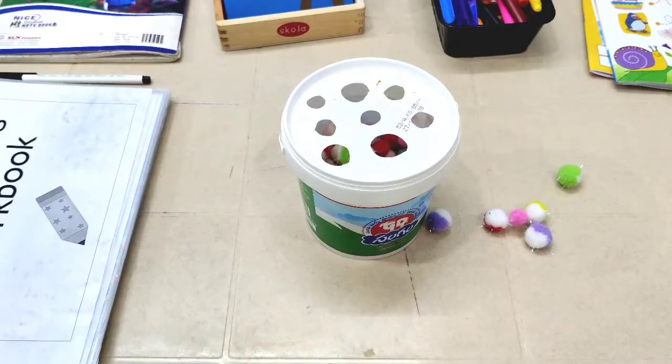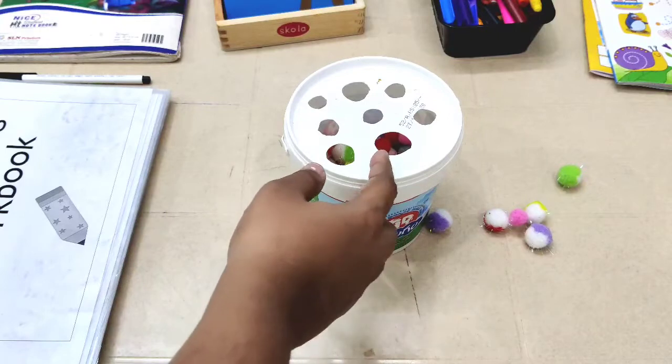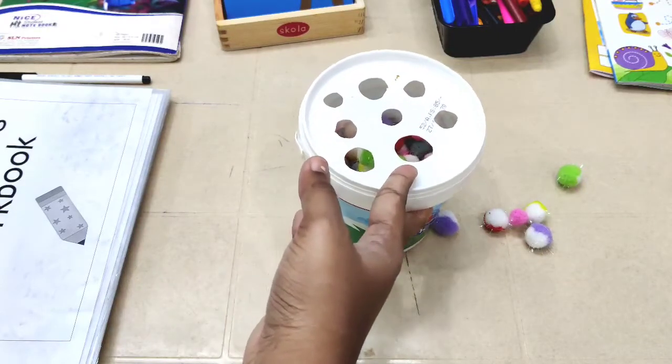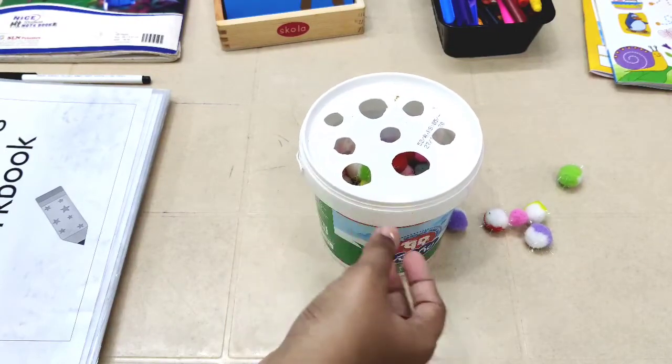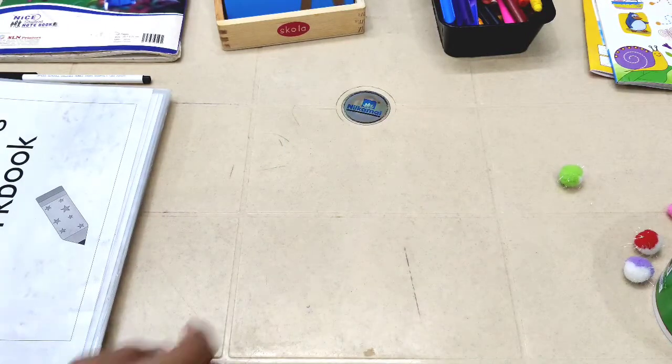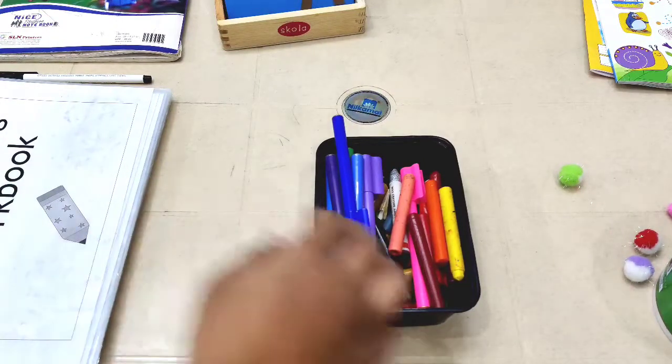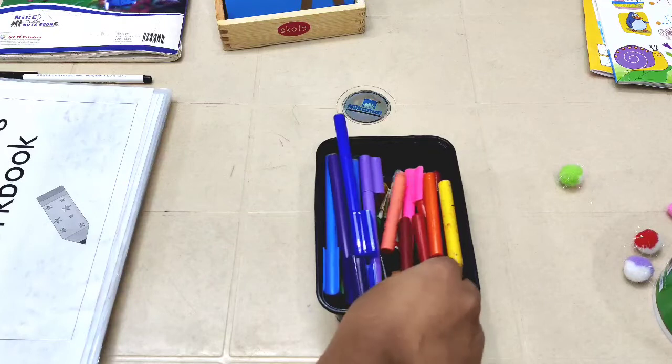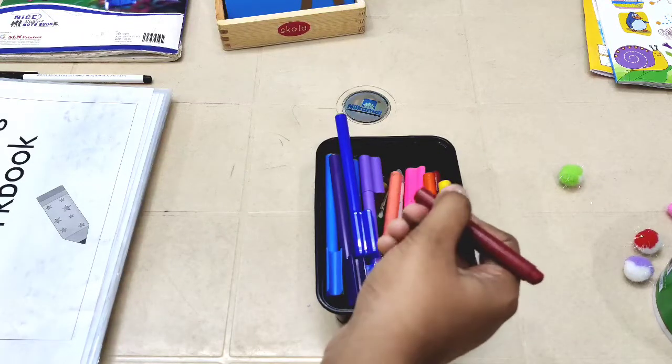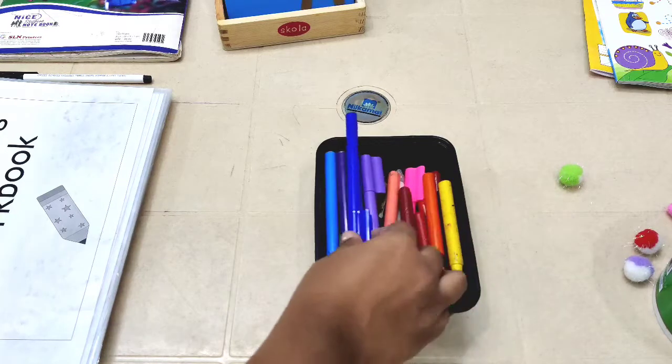Another thing you want them doing is start holding pencils, sketches, or crayons. Buy those jumbo crayons because it is easy for the little one to hold.